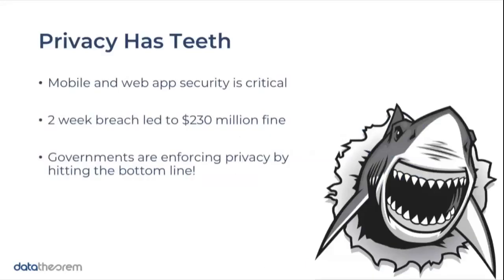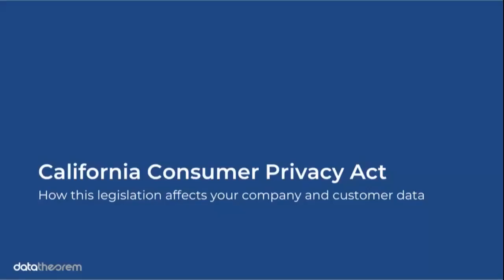What this is telling us is that privacy now has teeth. Something as simple as a mobile and web app security issue over a two-week period led to a 230 million dollar fine — governments are enforcing privacy by hitting the bottom line for organizations. This fine is coming from GDPR as they're now starting to hand down those fines. We also saw Marriott being looked at for a very large fine in the hundreds of millions. The European Union really spearheaded data privacy for consumers, and now California with the California Consumer Privacy Act going into 2020 is leading the charge in the United States.